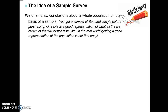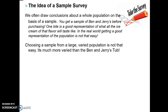What makes a sample survey good or bad, and how can we make it the best representation possible? Our goal is to draw conclusions about a whole population based on a sample. For example, if you go to Ben and Jerry's and take one bite of their monkey ice cream, that one bite is a good representation of the whole bin. In the real world, though, getting a good representation of the entire population is not that easy — we have a large, varied population, much more varied than a Ben and Jerry's tub.